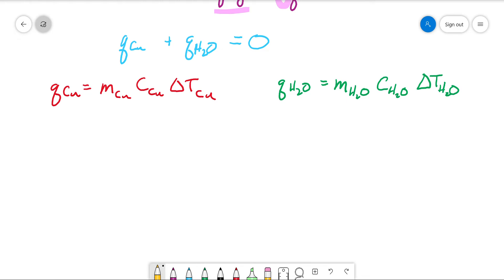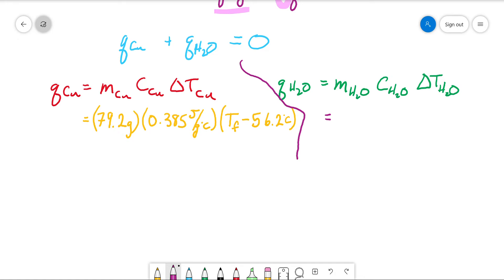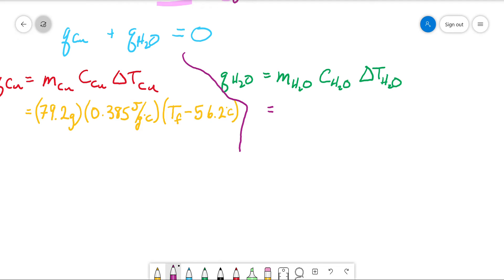So we can plug in numbers for each one of these things. Mass of the copper was 79.2 grams. C of the copper is 0.385 joules per gram degrees Celsius. And then delta T is T final minus 56.2. Mass of the water was 195 grams. C of the water, this never changes, 4.184 joules per gram degrees Celsius. And you'll note that is the conversion between, that's the same value as the conversion between calories and joules. And T final minus 15.0 degrees Celsius.